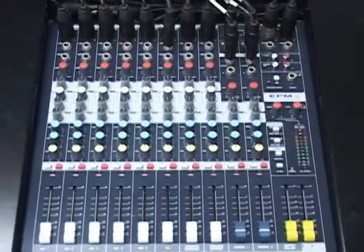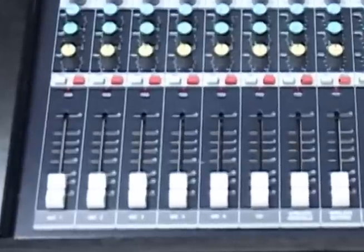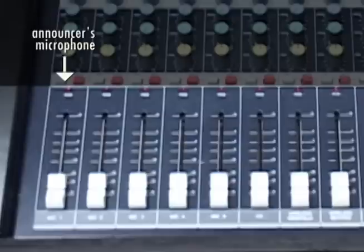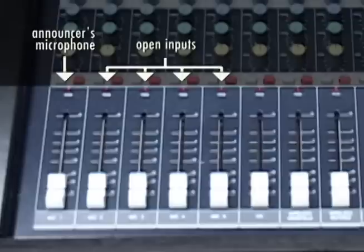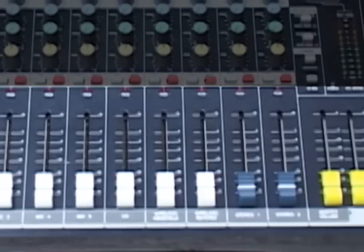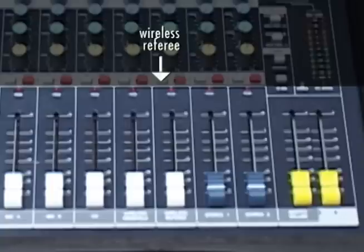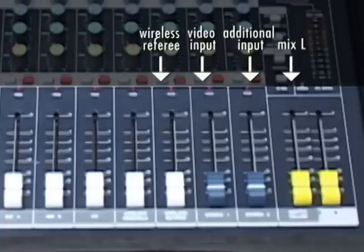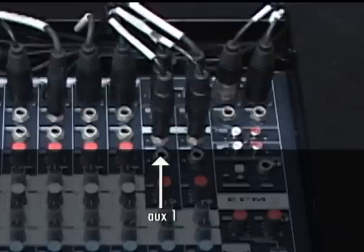Now that I have covered the basics of the mixer, I will cover the connection configuration of your system when it arrives to site. Channel 1, mic 1, is the announcer's microphone connected at the I/O panel. Channels 2 through 5 are all open inputs, also connected at the I/O panel. Channel 6 is a CD player connected via the quarter-inch input connector. Channel 7 is a wireless handheld. Channel 8 is for the wireless referee mic. Stereo 1 is for video input. Stereo 2 is used for any additional stereo or video inputs. Mix L is the main audio output to the sound system. Mix R is an open audio output. Aux 1 is the output to the announcer's headphones connected at the I/O panel. Aux 2 is the output used for the optional in-ear monitoring system.